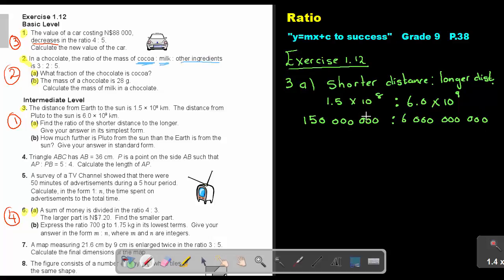So, I can basically cancel, divide by a million. And if I divide by a million, how many zeros will that be? 1, 2, 3, 4, 5, 6. So, then I'm ending. I'm just writing the in-between value. And it's 6. And now, I can divide by 150. Divide 150. And the final answer will be 1 to 40. Now, that is the shorter to the longer distance.